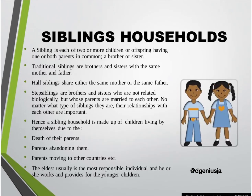Now suppose both Carl and Deesha decide to move abroad to seek a better life for Kevin and Carla, while leaving Kevin to take care of his younger sister Carla. Then we would form a sibling household. A sibling is each of two or more children having one or both parents in common — that would be a brother or a sister. Hence a sibling household is made up of children living by themselves due to the death of parents, parents abandoning them, or parents migrating to other countries. The eldest is usually the most responsible individual and works to provide for the younger children.